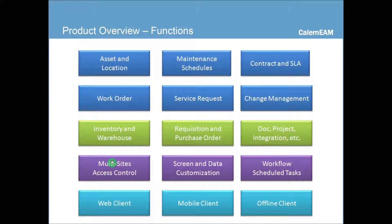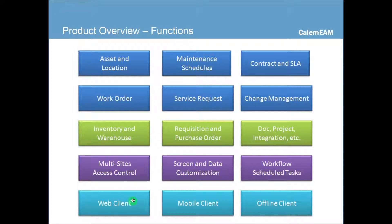The fourth row in purple contains the system functions supporting Calum Enterprise, including multi-sites, access control, screen and data customization, and workflow schedules. The last row shows the clients that are supported: the web client, mobile client, as well as the offline client.